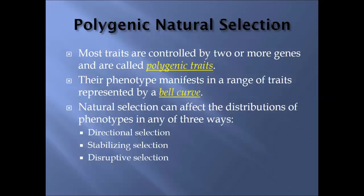We talked briefly about monogenic versus polygenic traits. Many simpler traits are monogenic — controlled by one gene — and therefore there's not a range of options. Polygenic traits are controlled by two or more genes, and when this happens you end up with a range of options or a whole spectrum of different categories. We can typically represent this with a bell curve, so it's important to understand how a bell curve works as we think about the modes of natural selection.